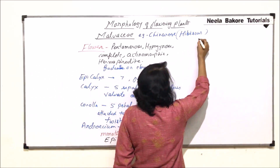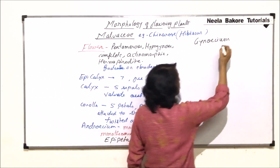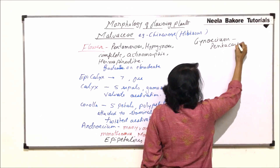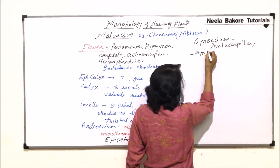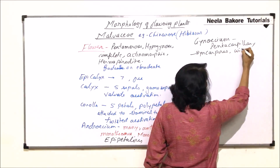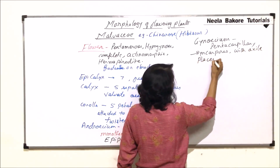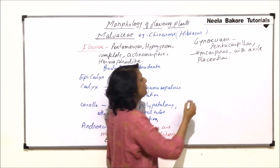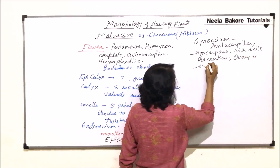Now the next and innermost whorl is the gynoecium. The ovary is pentacarpellary and syncarpous, with axile placentation. The ovary is superior.